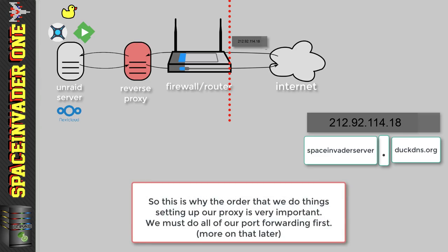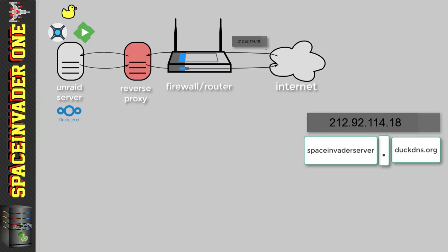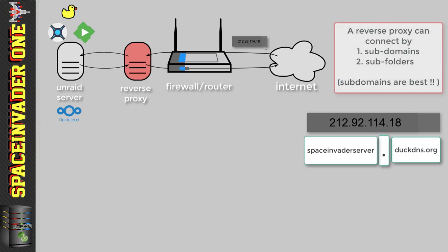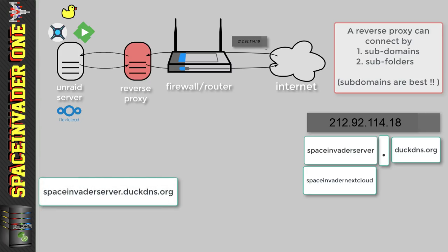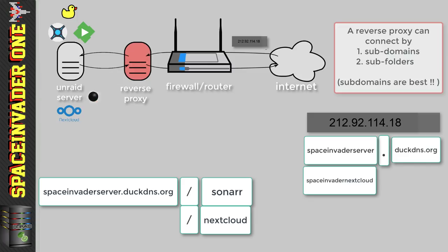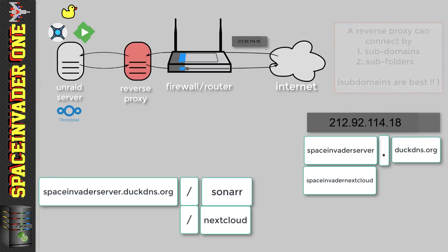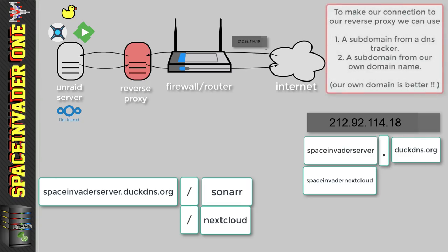It's important to do all port forwarding on your router first. Our reverse proxy can connect to things in two ways: using a subdomain such as SpaceInvaderServer.DuckDNS.org to connect to one thing, and another subdomain like SpaceInvaderNextCloud.DuckDNS.org to connect to another. There's also another way — using a subfolder. So you could have SpaceInvaderServer.DuckDNS.org/Sonar connecting to Sonar, and SpaceInvaderServer.DuckDNS.org/NextCloud connecting to NextCloud. However, for NextCloud it is advised to use a subdomain as it's better for security.